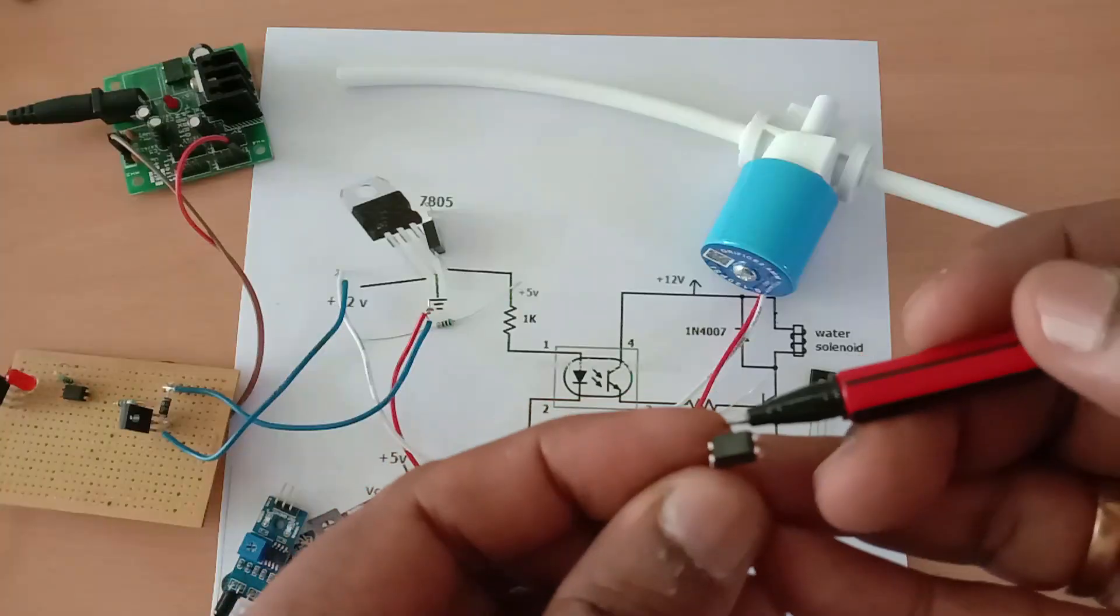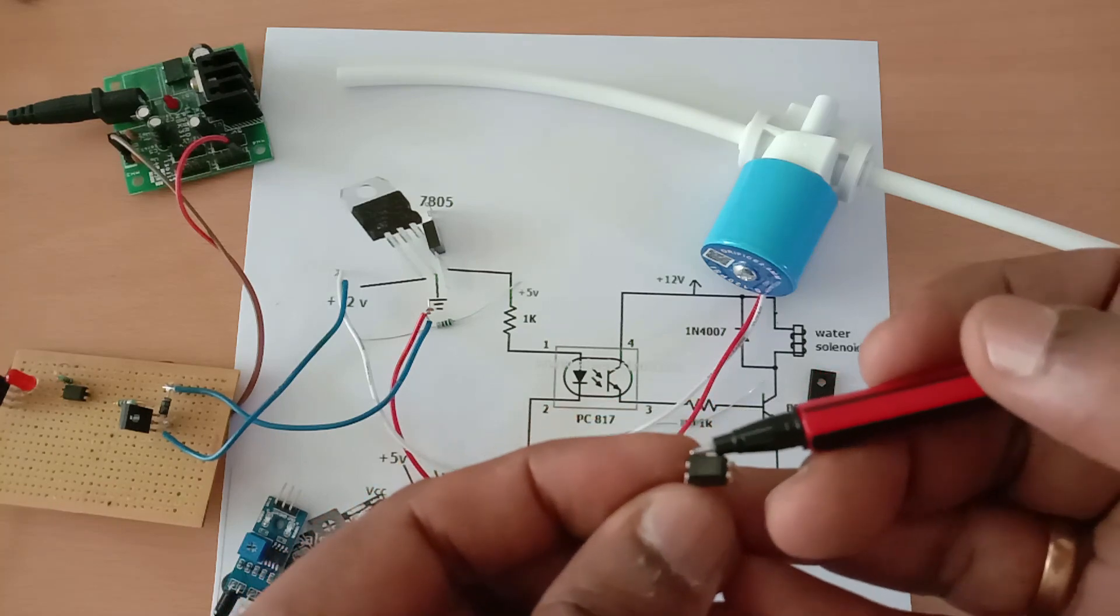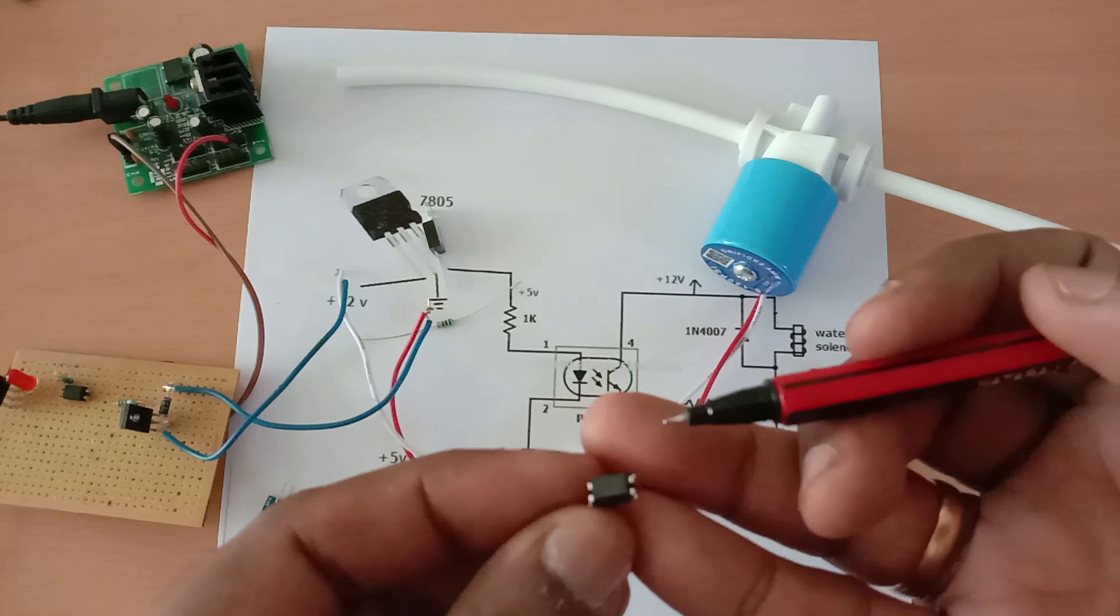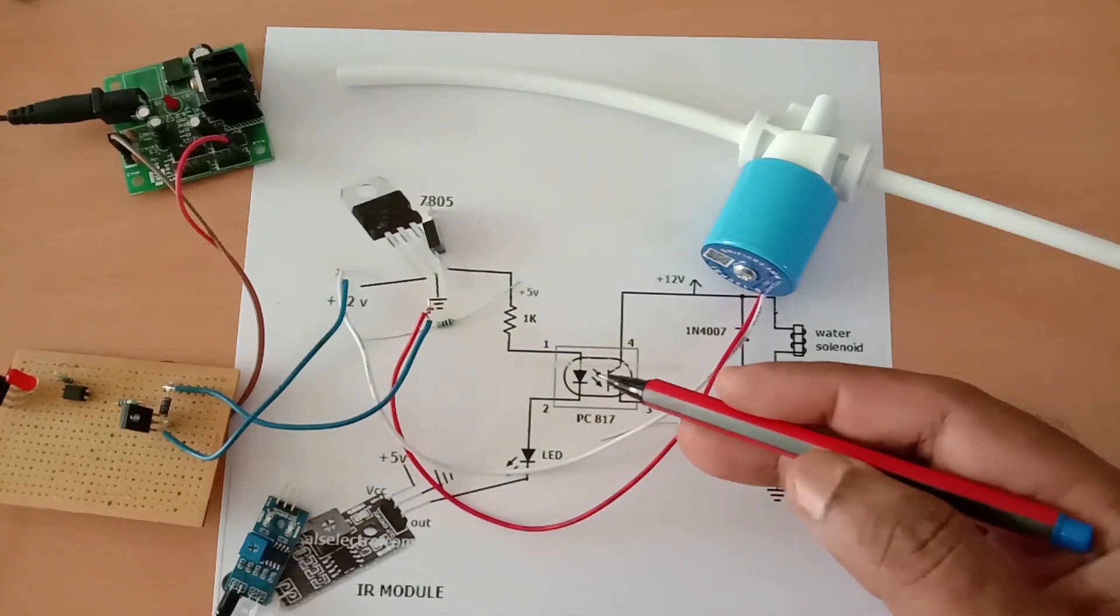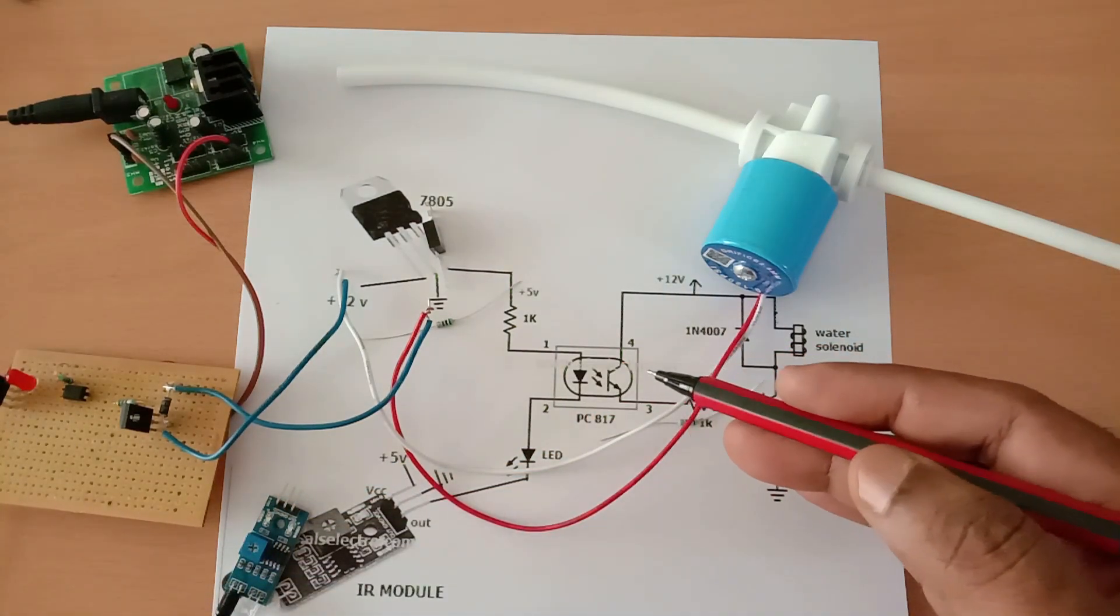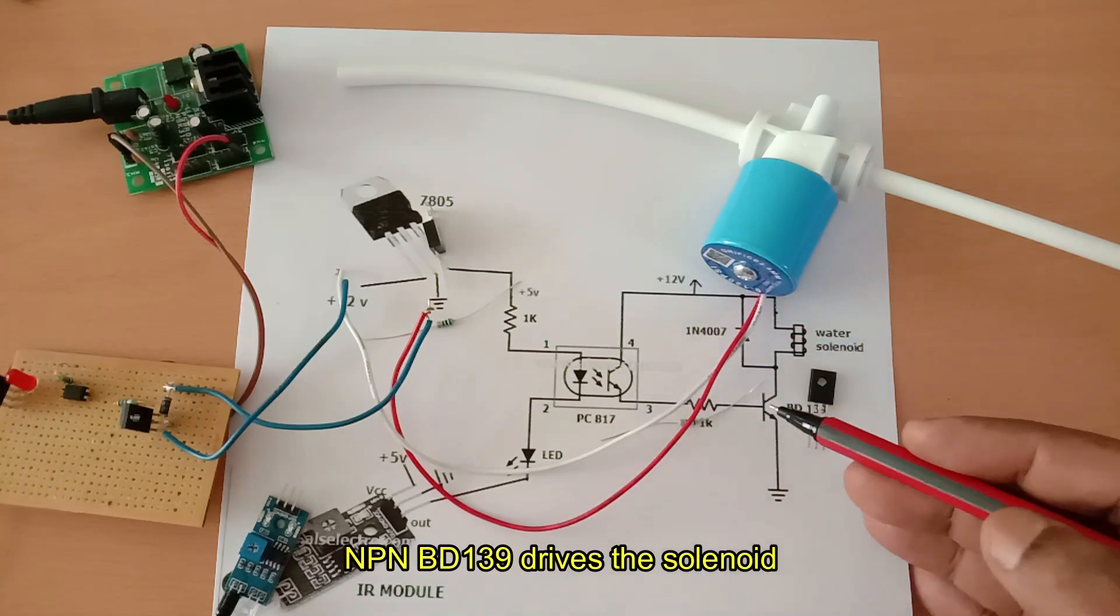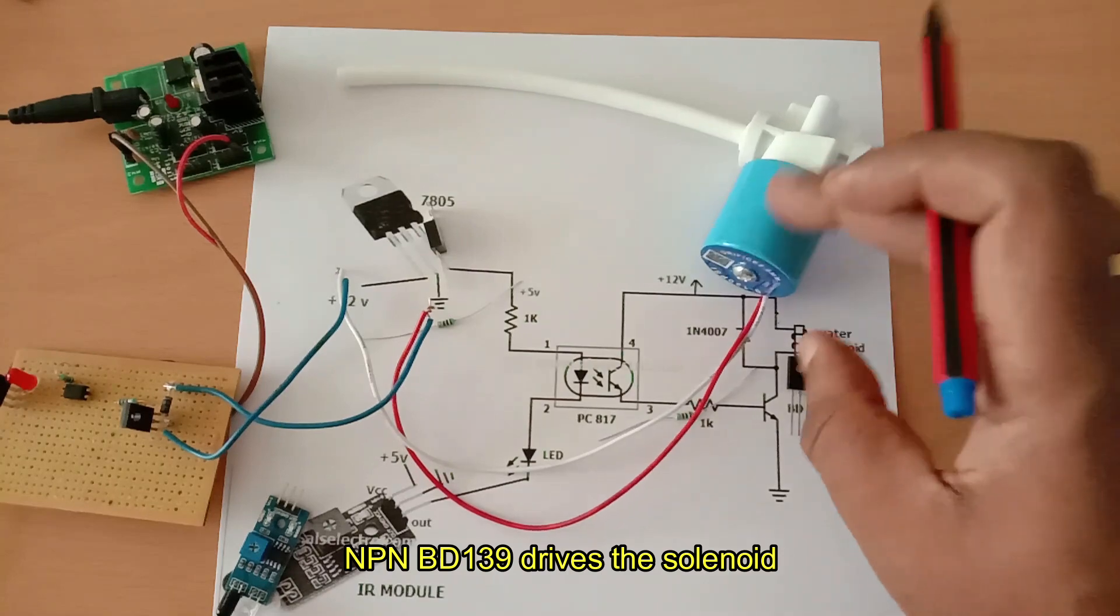When the IR LED conducts, the photo transistor inside the optocoupler drives a transistor. The transistor used here is an NPN BD139, which in turn drives the solenoid or water pump.